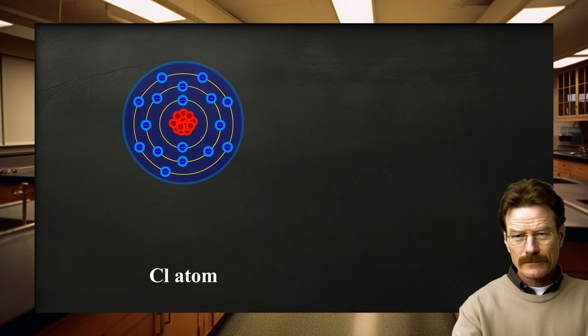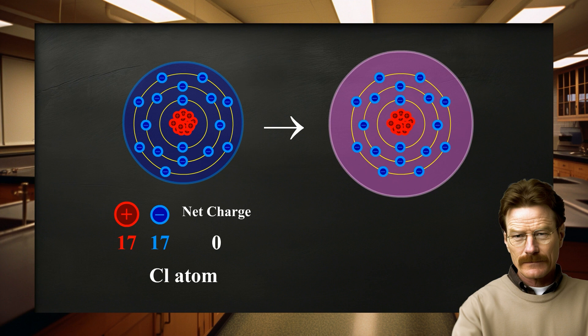Consider the chlorine atom, which is located in group 17. Its atomic number is 17, so it will have 17 protons and 17 electrons. The sum of the charges is equal to zero, making the chlorine atom electrically neutral. Atoms in group 17 can gain 1 electron, so chlorine will become an anion. It will now have 17 protons and 18 electrons, giving it a net charge of 1 negative.